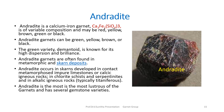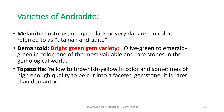Andradite is a calcium iron garnet of variable composition and may be red, yellow, brown, green, or black. The green variety is known as demantoid, which is known for high dispersion and brilliance. Andradite garnets are often found in metamorphic and skarn deposits. They occur in contact-metamorphosed impure limestones and calcic igneous rocks, as well as in chlorite schists, serpentinites, and alkali igneous rocks, typically if titaniferous. Andradite is the most lustrous of the garnets, with varieties including melanite, demantoid, and topazolite.